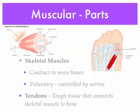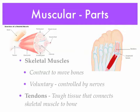The muscular system has a few more parts. There are three different types of muscles. The first type is skeletal muscle, which is voluntary — it's controlled by nerves and is the type of movement you consciously think about. Skeletal muscles contract to move bones. Tendons are also part of the muscular system, and they connect skeletal muscle to bone.